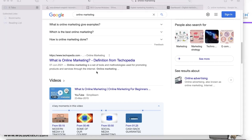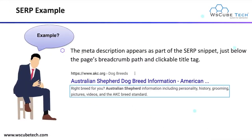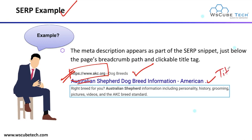This is the first point of contact — the first description your user sees on the search engine result page about your web page. Here is a search engine result page example. As you can see, this is the URL of the website, this is your landing page URL, after that this is your title, and this is your meta description. So this meta description appears on your search engine result page.